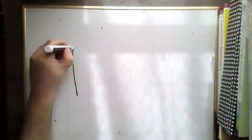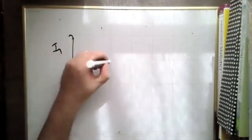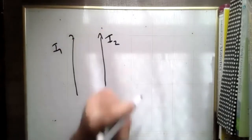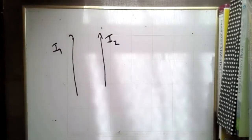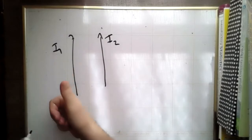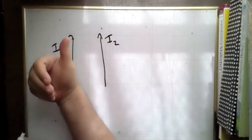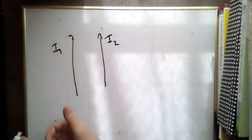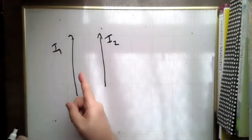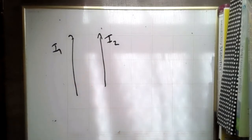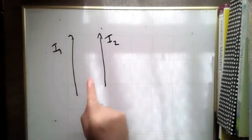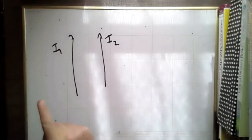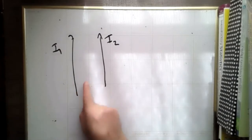Let's say we have I1 and I2 flowing in the same direction. Looking at I1: any time something's going straight, put your thumb in the direction of the straight thing and your fingers will curl around in the direction of the field. So I is straight, B will be curly. If B were straight, I would be curly. So B curls around this wire.